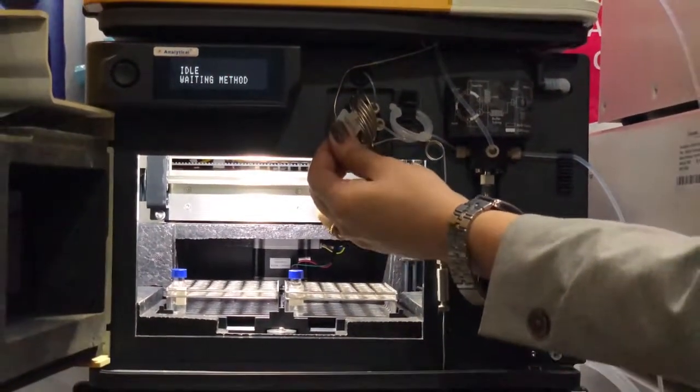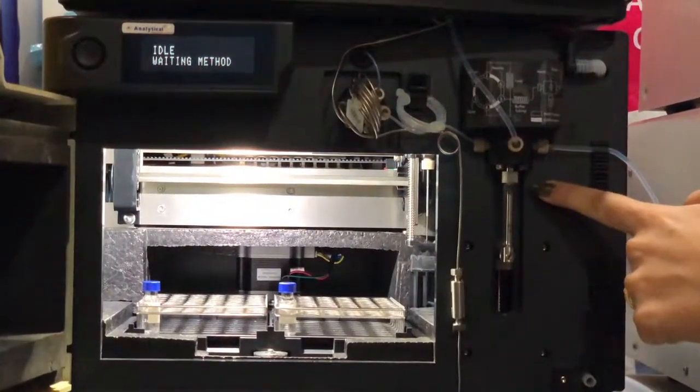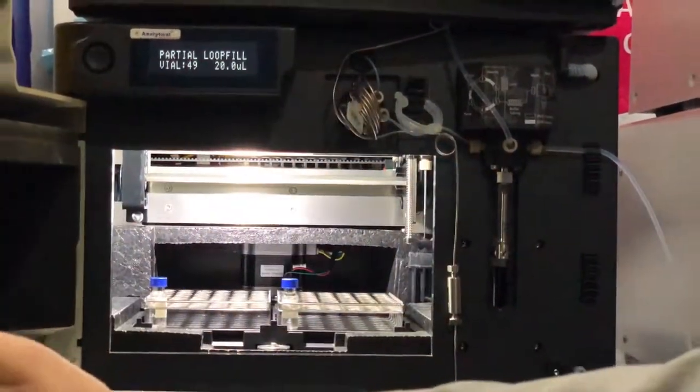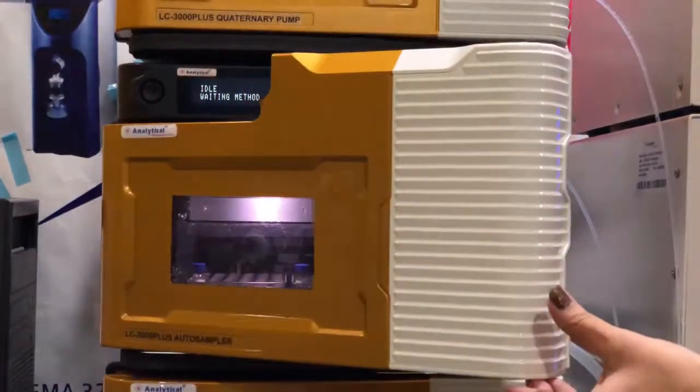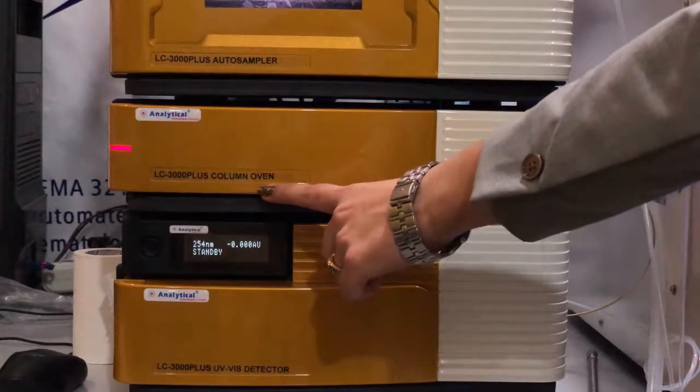This is the needle and this one is the injection tube. Now we will go for its testing. This is LC 3000 Plus column oven.